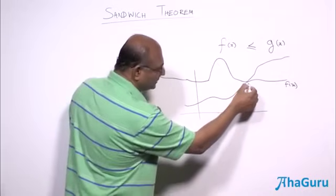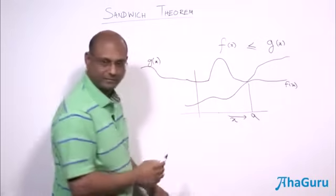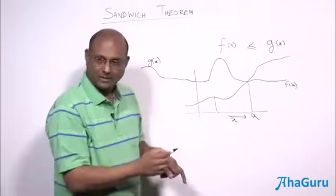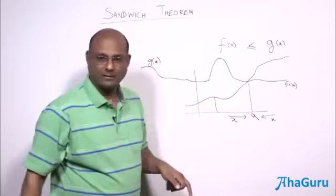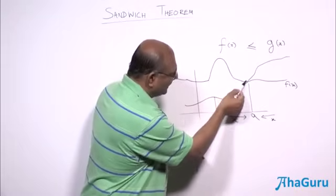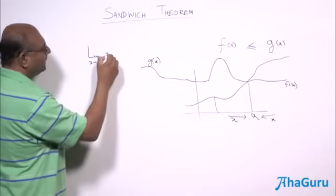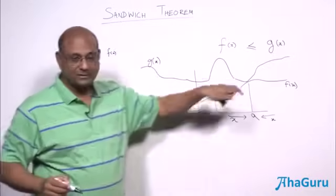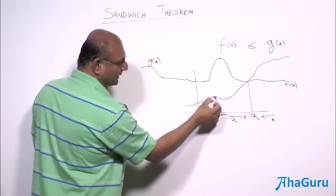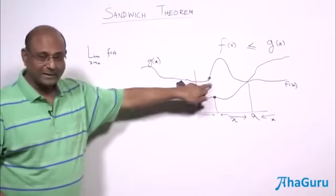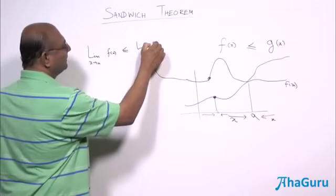As I approach some point A, as x approaches A, g(x) gets very close to f(x). So the limit as x goes to A of f(x) could become equal to the limit of g(x). It is not possible that the limit of g(x) is less than the limit of f(x). So the limit of f(x) must be less than or equal to the limit of g(x).